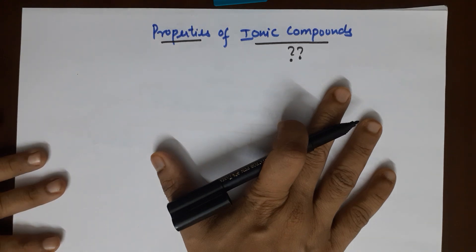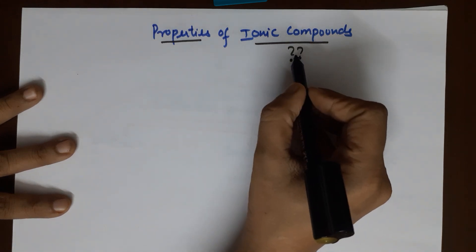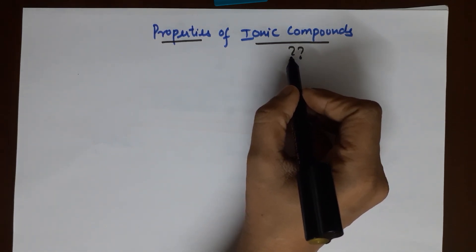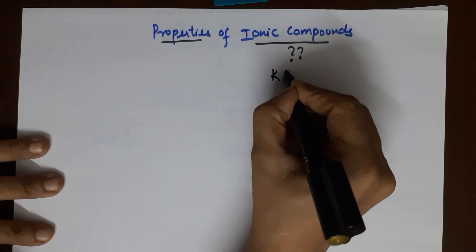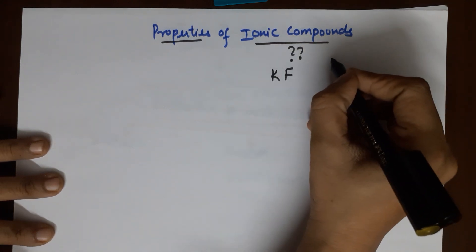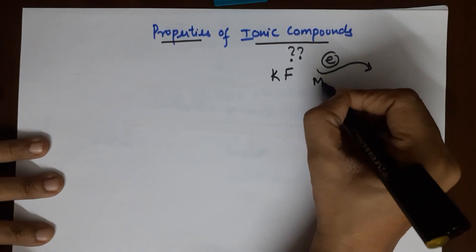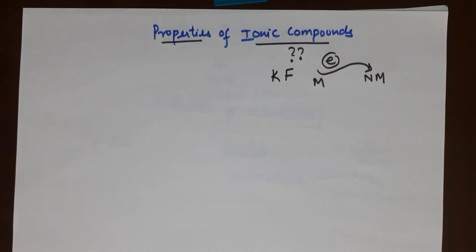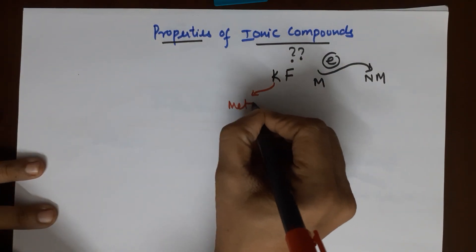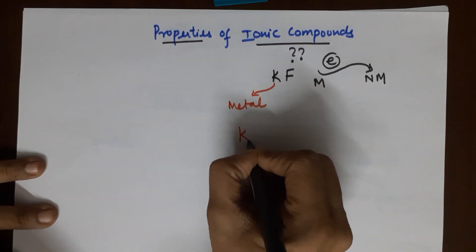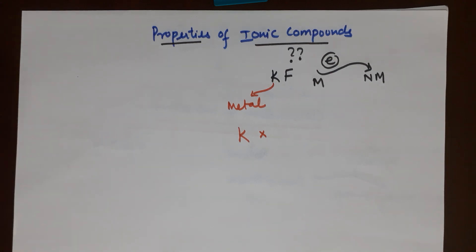Before going to the properties, I would like to revisit ionic compounds once again so that your concepts are clear. The example I am taking is that of potassium fluoride. As you very well know, ionic compounds are formed by electron transfer from the metal to the non-metal. Out of these two, potassium is the metal, and if I draw the Lewis dot structure for potassium, it becomes K with one electron, because that's the valence electron.